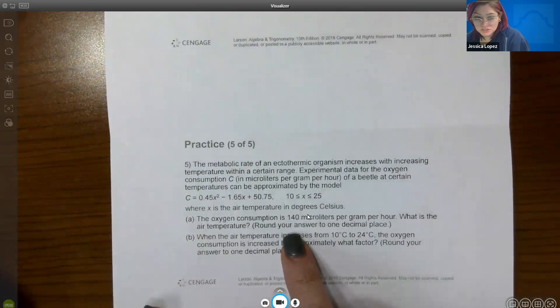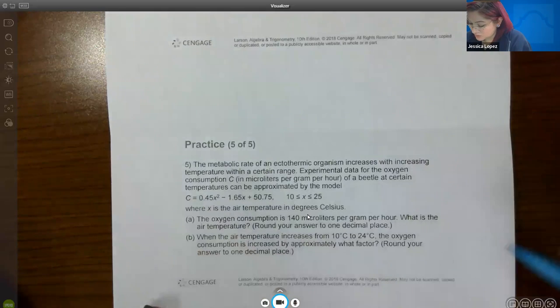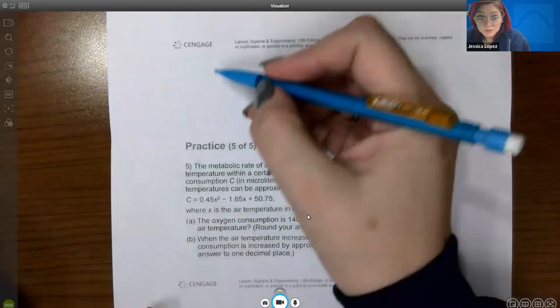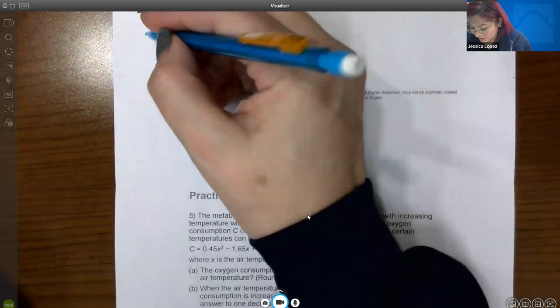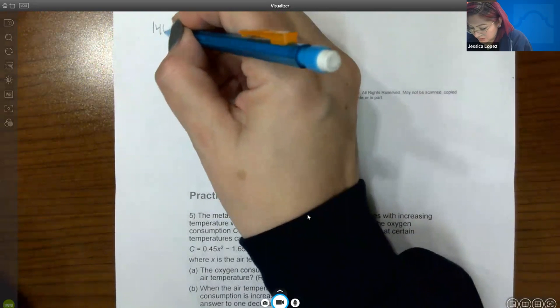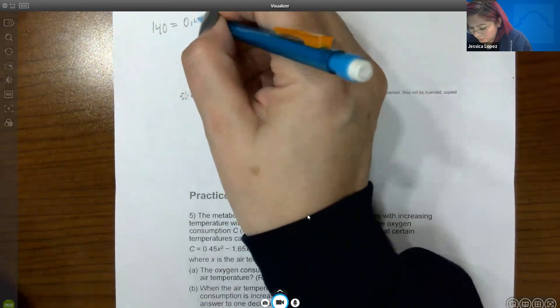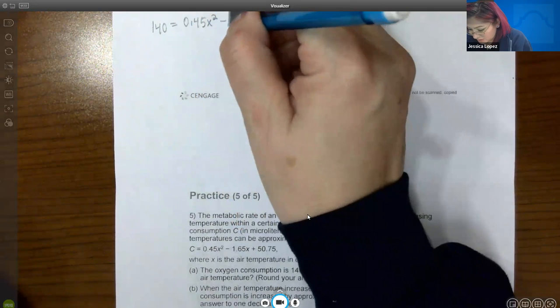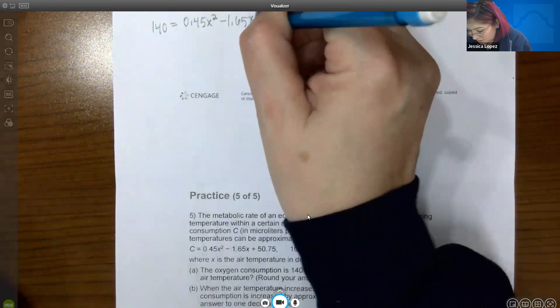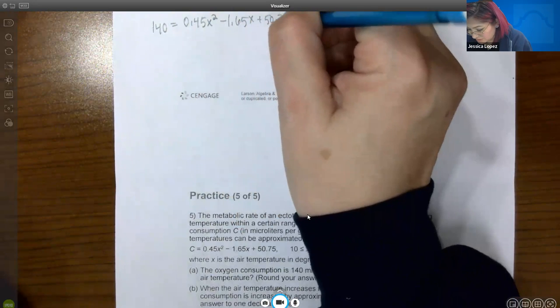So if they're giving me the oxygen consumption, that means C is equal to 140. So I'm going to come up top and I'm going to say, instead of C, I'm going to say 140, 0.45 X squared minus 1.65 X plus 50.75.